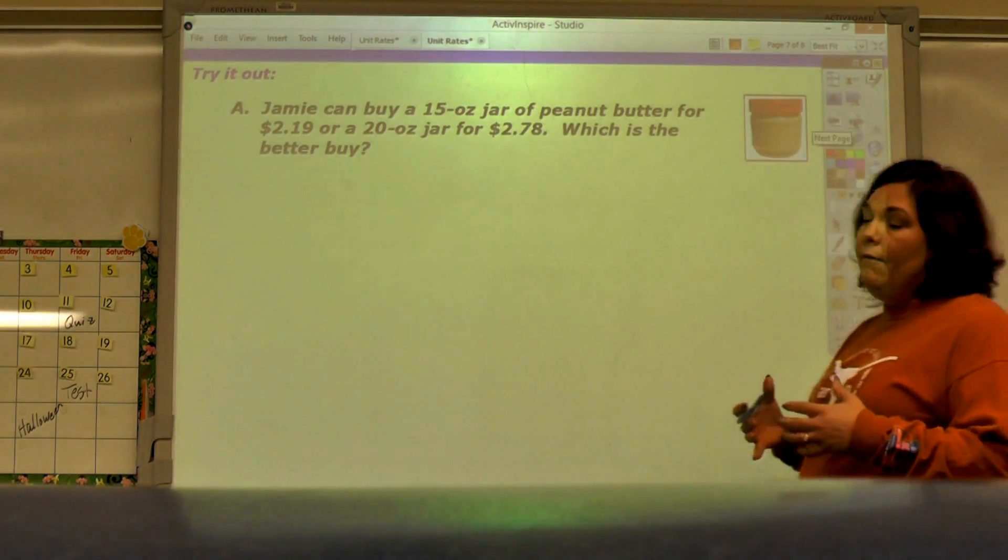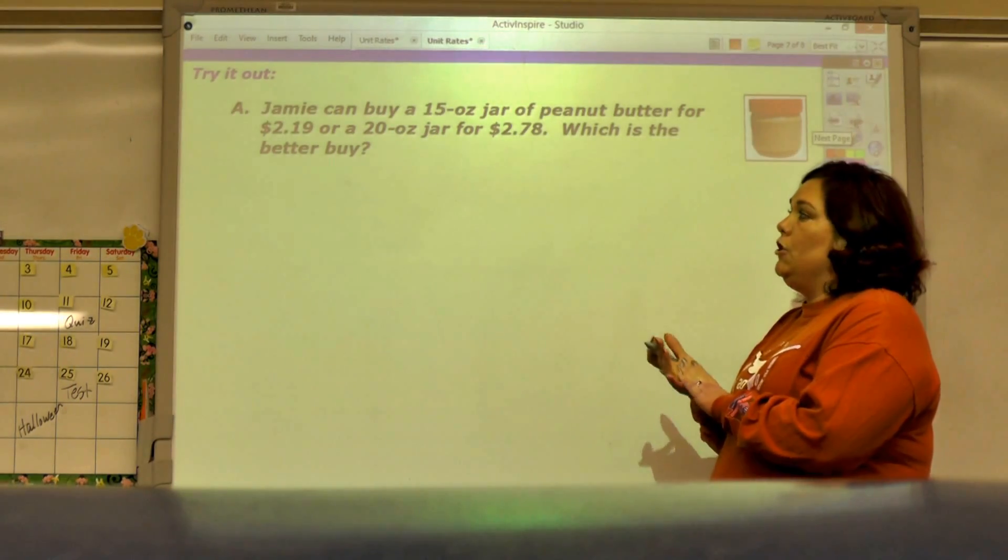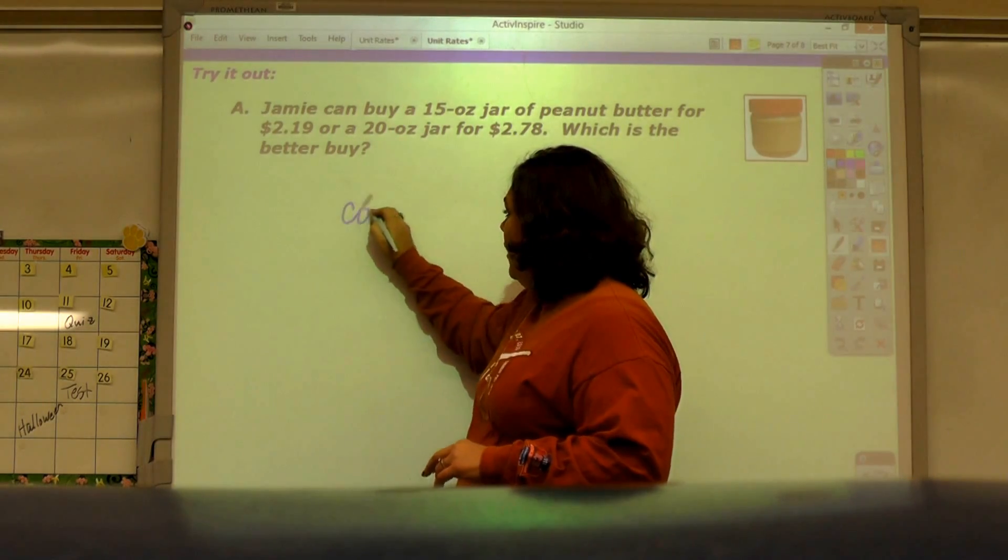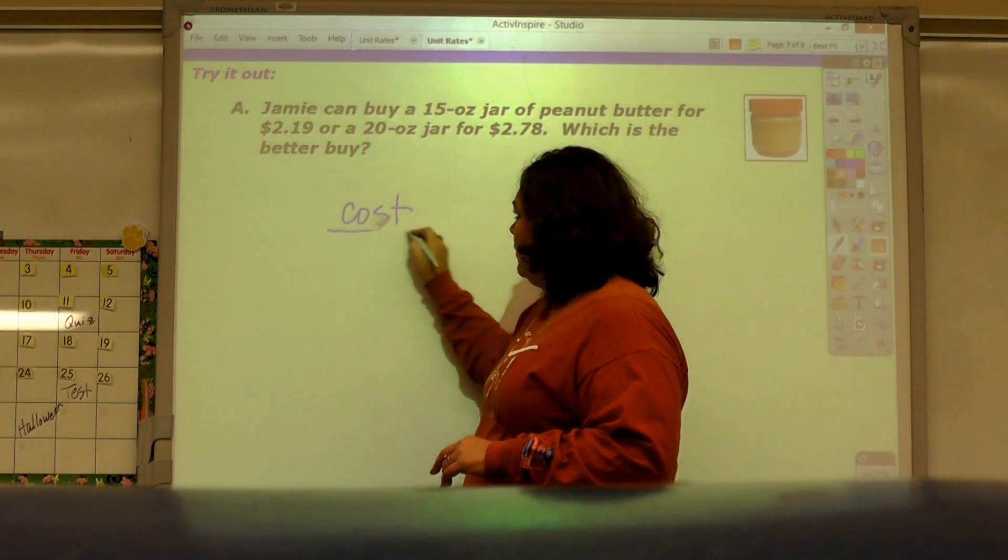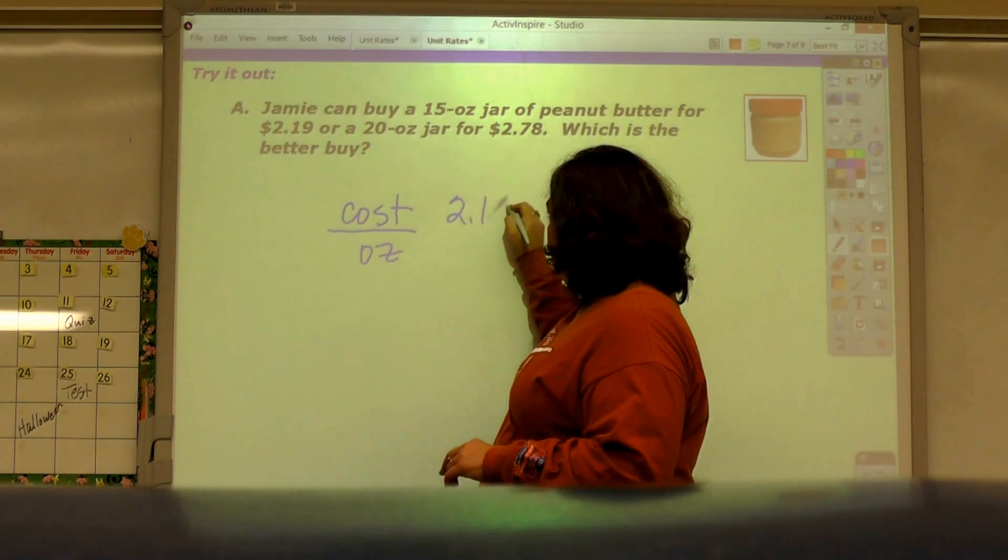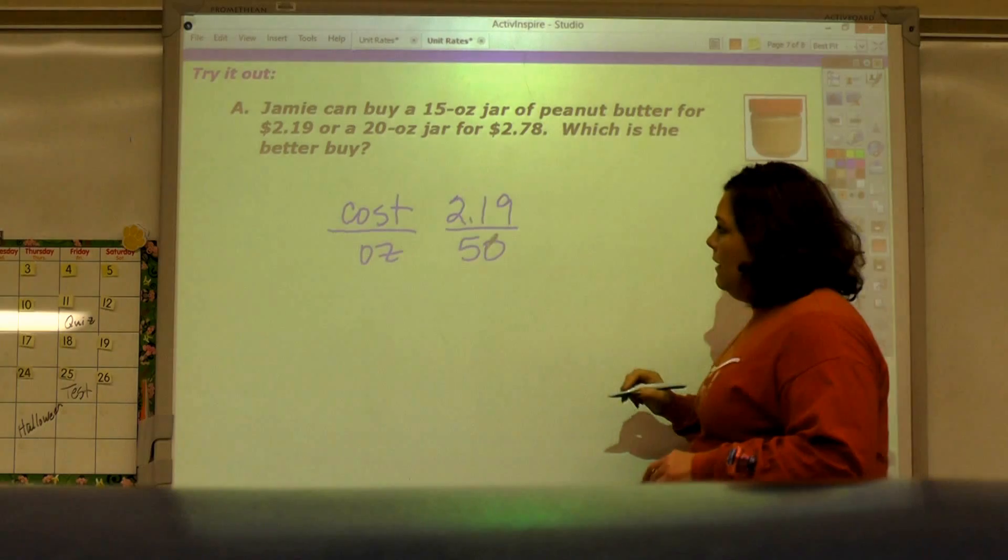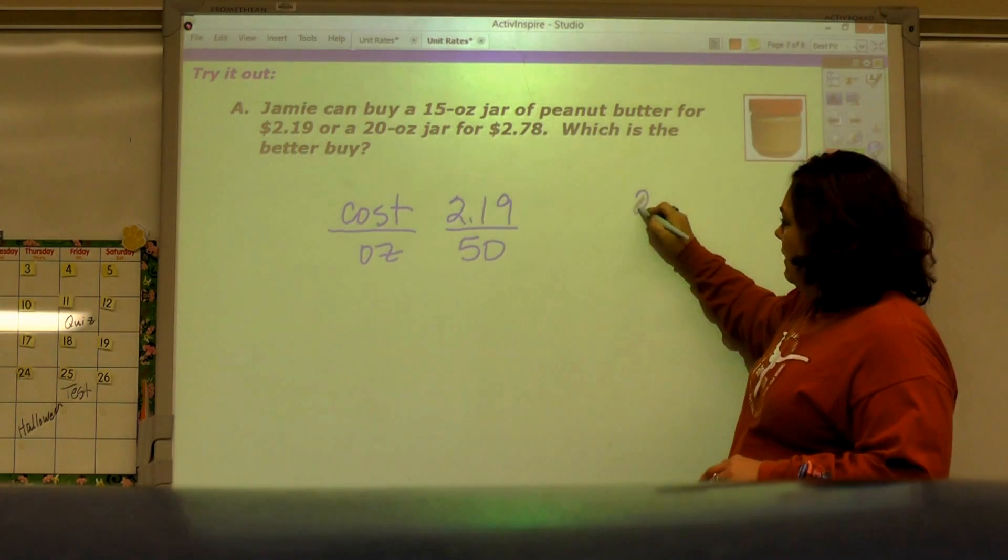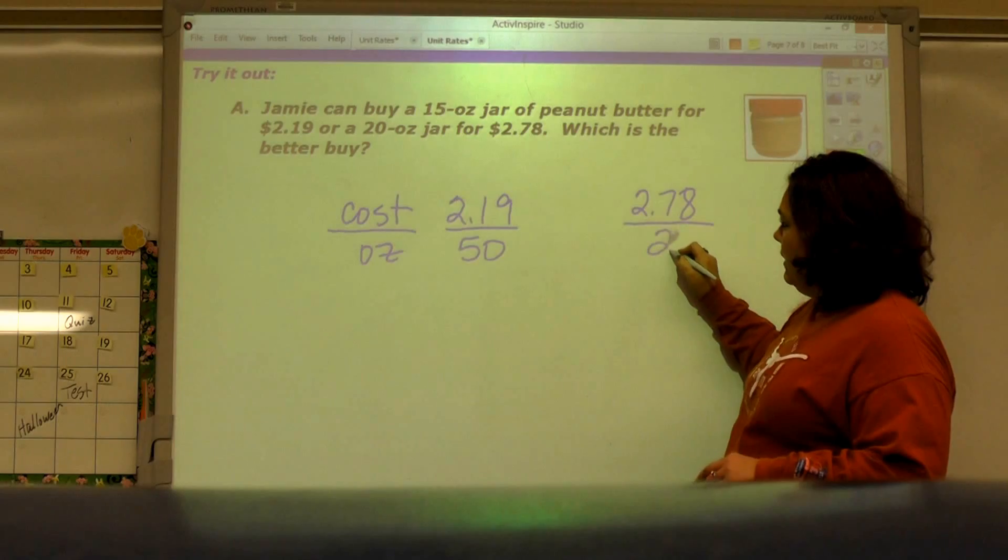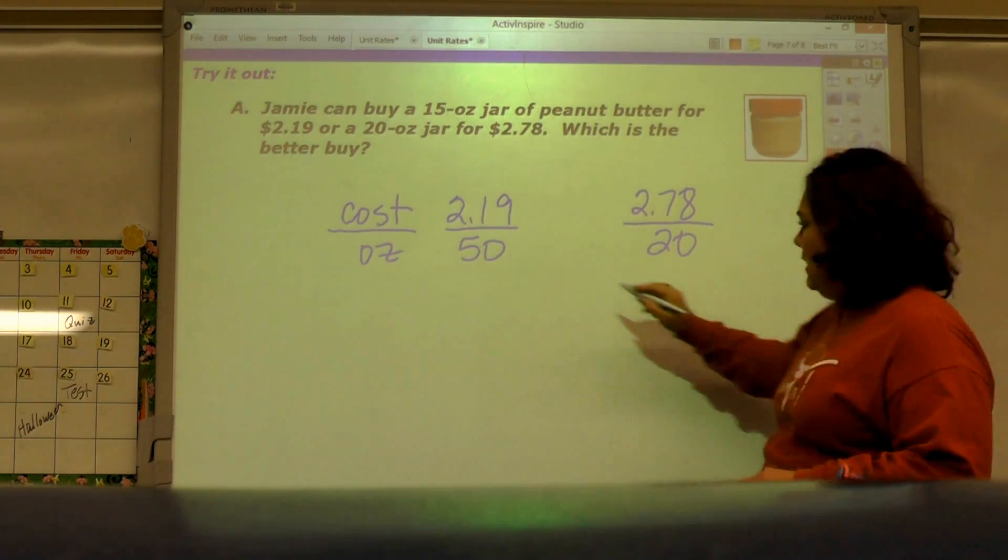You're going to have an opportunity to try this one out. I'll help you set it up. It says Jamie can buy a 15-ounce jar of peanut butter for $2.19. So we've got cost to ounces, we've got $2.19 to 15 ounces, and then we've got $2.78 to 20 ounces. Which is a better buy?